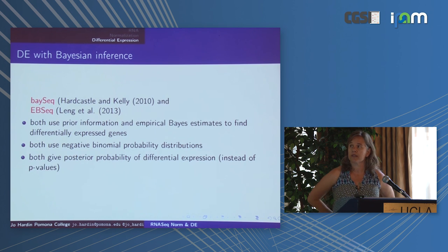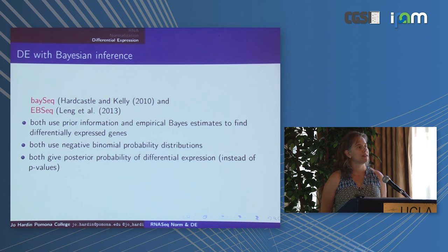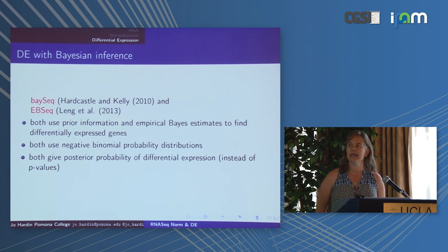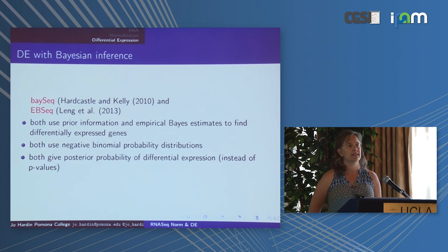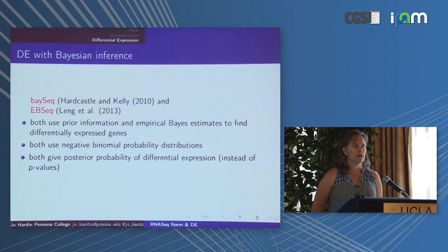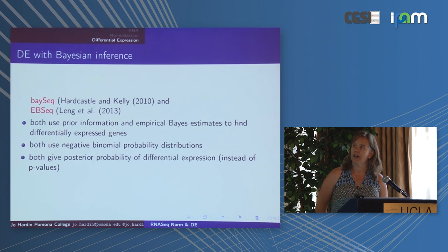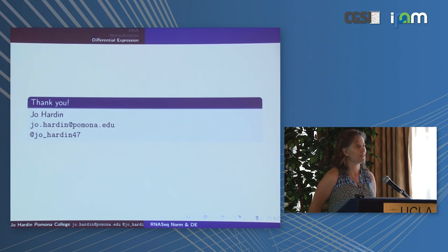Finally, Bayseq and EBSeq use empirical Bayes information to bolster the power of the tests. Both use negative binomial probability distributions to compute a posterior probability of differential expression. In Bayesian inference, we look for posterior probabilities instead of p-values, so there are similarities in what comes out but a slightly different language.